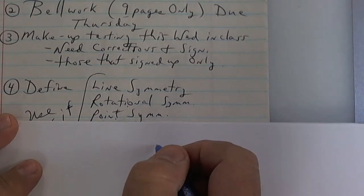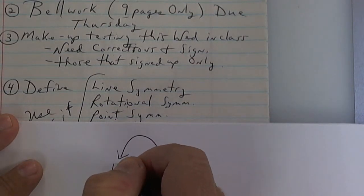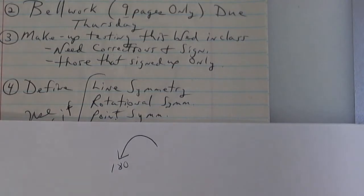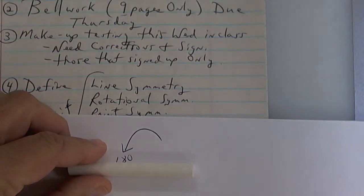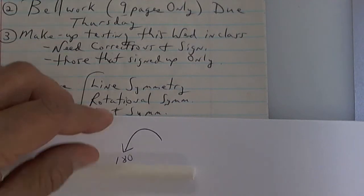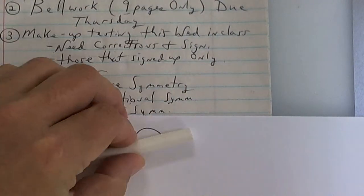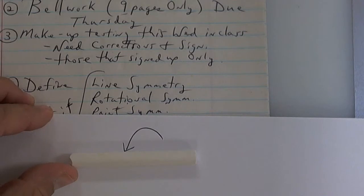Point symmetry is rotational symmetry but it's exactly 180 degrees. If I take this piece of chalk and you turn it 180 degrees, it still looks the same.